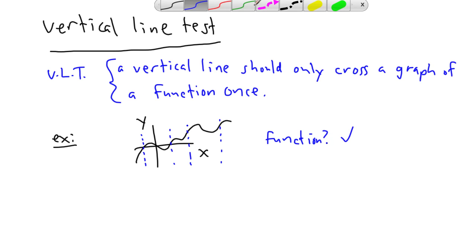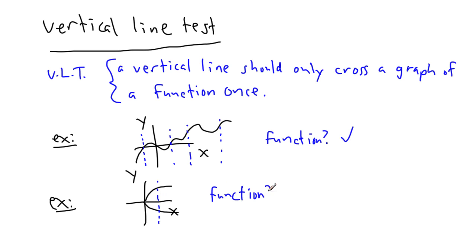We can do another example. Let's do something a little weirder. We have x and y again, and this is the equation of plus or minus square root of x. So this is the graph. It's pretty obvious that if I take a vertical line and put it here, I've crossed it once and twice. This vertical line intersects this graph two times. So is it a function? No.